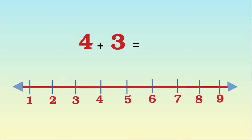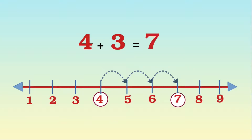First we want to start with the number 4, then jump 3 numbers towards the right. That is 1, 2, 3. So what number we are getting? We are getting 7. So the answer is 7. So 4 plus 3 is 7.